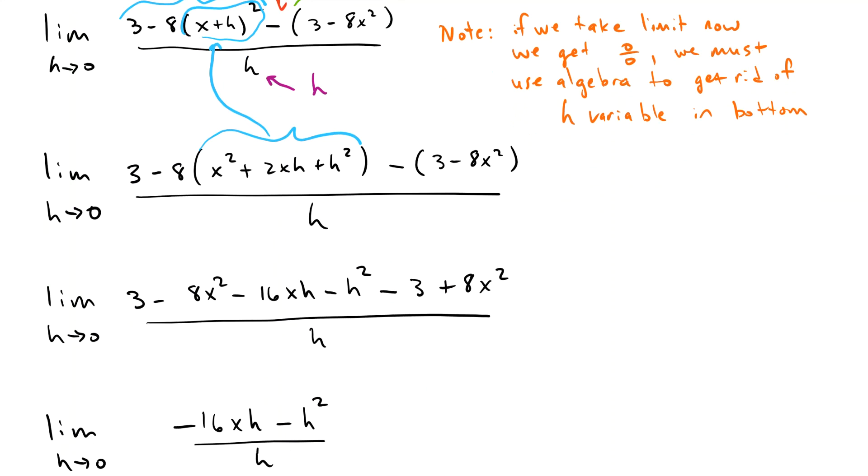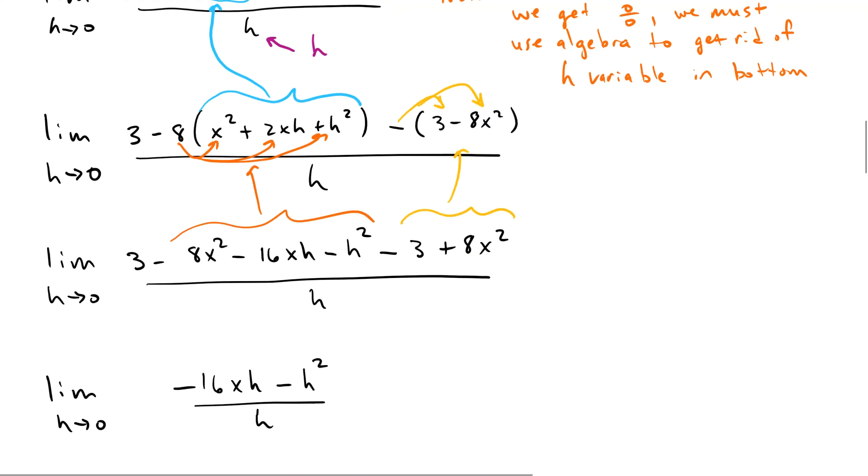If we distribute this negative 8 into this quantity in parentheses, then we get negative 8x squared minus 16xh minus 8h squared. If we do a similar thing to this negative here, then we get negative 3 and positive 8x squared.